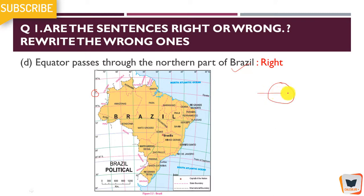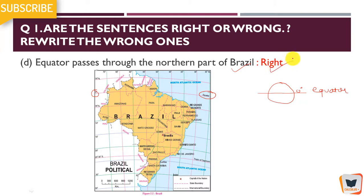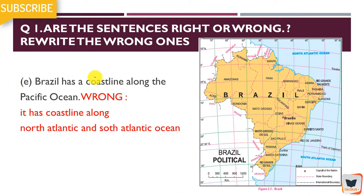Equator passes through the northern part of Brazil. The equator is where zero degree is — it cuts the globe at the center. The equator lies through the northern part of Brazil, and that is absolutely right. So this answer is correct.